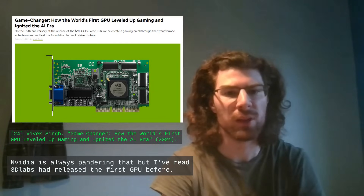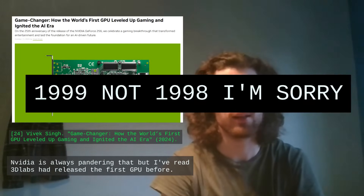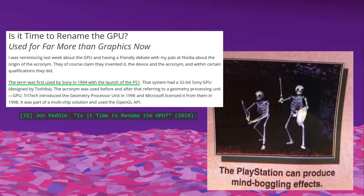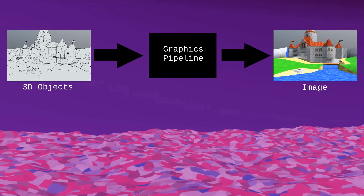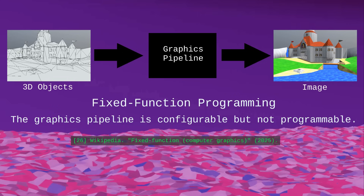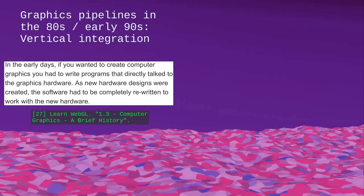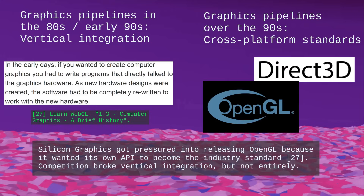Initially, these chips were only intended to run graphics pipelines that would take vertices, process them, and output images — this is called fixed function programming. You can modify the parameters of the pipeline, but you cannot execute arbitrary code. Each manufacturer had its own way of doing things, so you had to adapt your code to each GPU. To address that, some companies made cross-platform standards like OpenGL and Direct3D, and developers adopted them because they improved productivity.